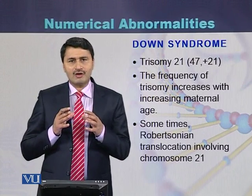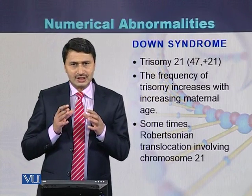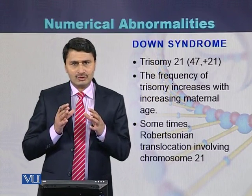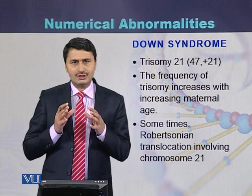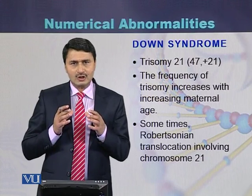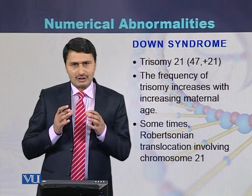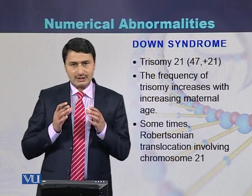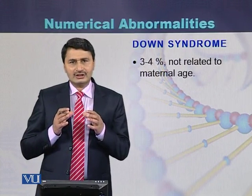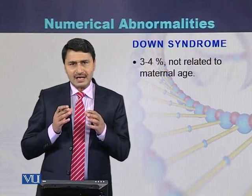Down syndrome is an example of trisomy — a numerical change of the chromosomes. Trisomy is due to one additional chromosome, which in this case is chromosome 21. The frequency of trisomy increases when the age of the mother increases. Sometimes Robertsonian translocation also causes Down syndrome. There are three to four percent of Down syndrome cases which are not related to maternal age.